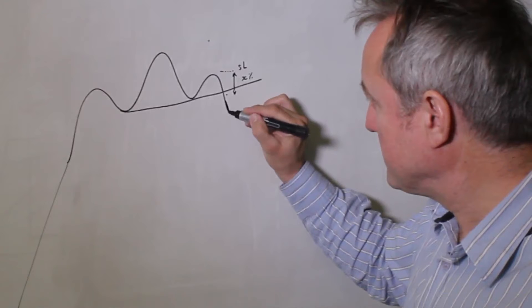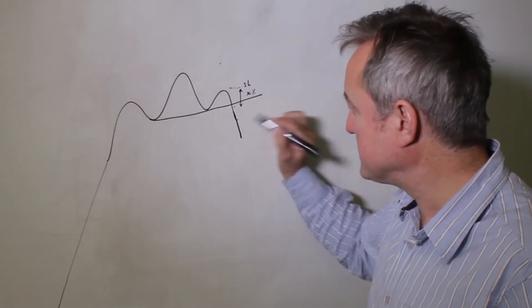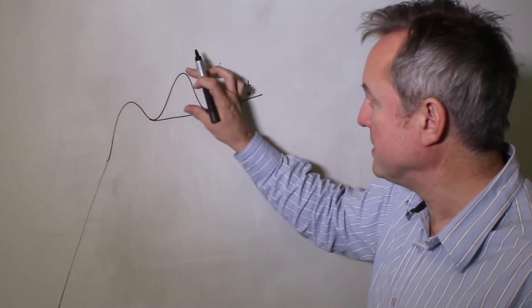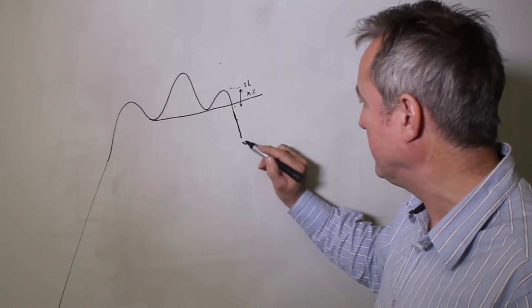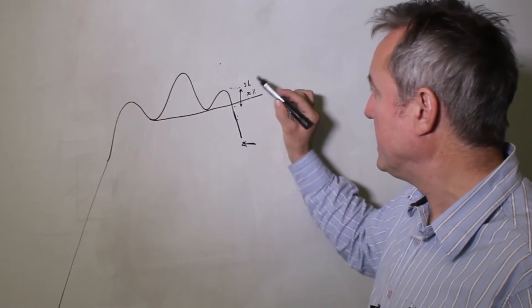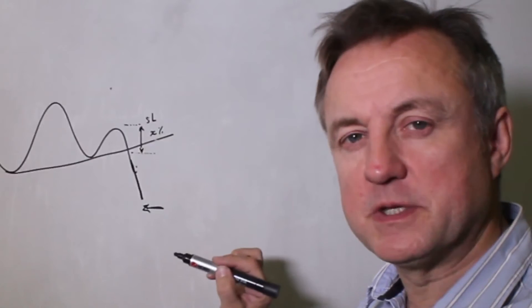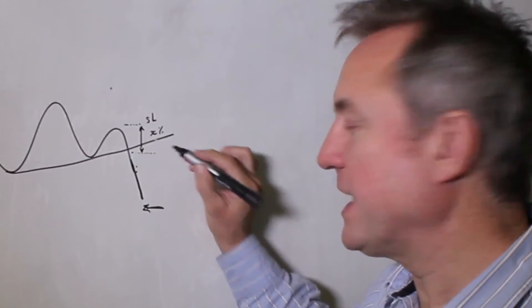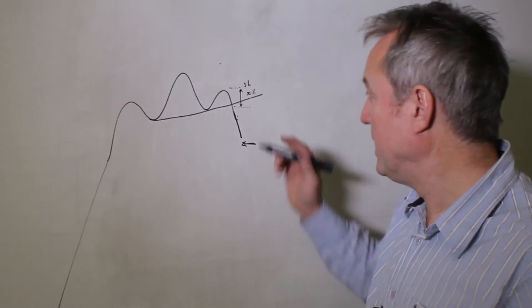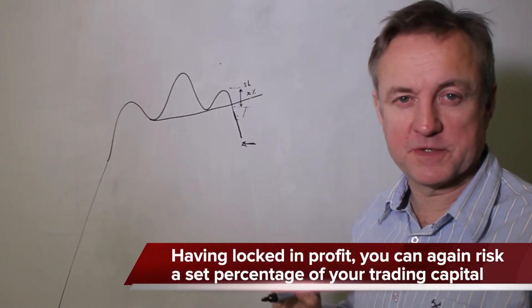Imagine the market goes on and his minimum likely move is down to about here, imagine the market goes to there, he might then move his stop loss to the get in level, in which case he's got a free trade in my view. The worst that can happen is the market is out for square.